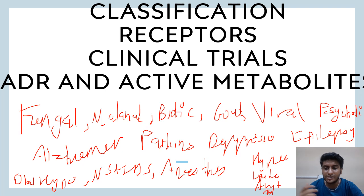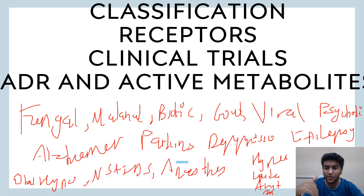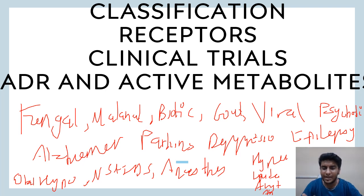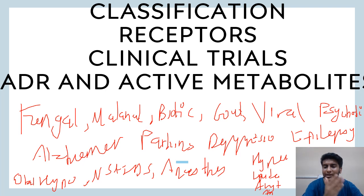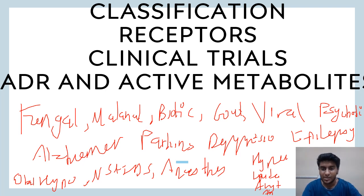For antivirals, you should know nucleoside reverse transcriptase inhibitors, non-nucleoside reverse transcriptase inhibitors, anti-herpes agents, anti-influenza agents — amantadine, rimantadine, oseltamivir, zanamivir, acyclovir — and delavirdine, ribavirin. For antipsychotics, know chlorpromazine, trifluoperazine, haloperidol, risperidone — and the difference between typical and atypical antipsychotics and their side effects. For Alzheimer's and Parkinson's: levodopa, carbidopa, amantadine.